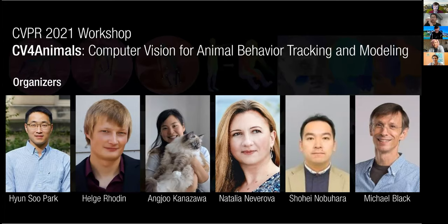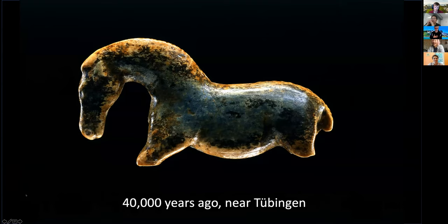I want to start by giving a little perspective, because in some ways this feels like a new field in computer vision, but I think the interest of humans in animals is fundamental and goes back to the very beginning of time. At least 40,000 years ago, near Tubican, humans were carving animals out of mammoth tusks — in three dimensions, not 2D. They did this because even then they knew how essential animals were to their survival, their livelihood, and their environment. And nothing has changed since today.